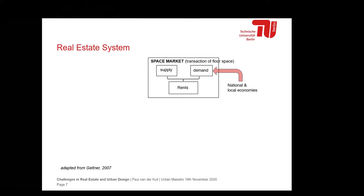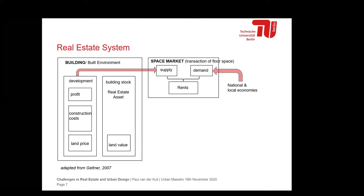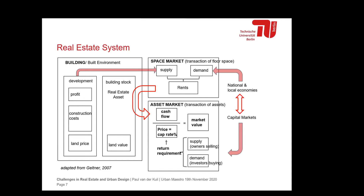The real estate system is active on basically two markets. The first is the space market, where floor spaces are transacted. Demand comes from national and local economies, and supply comes from the building industry. Floor space is exchanged at rents. Buildings are provided by the building industry, with developers buying land at a certain price on the land market and constructing buildings on it. These buildings become our building stock — the real estate assets — which leads us to the second and, I think, most important market: the asset market.